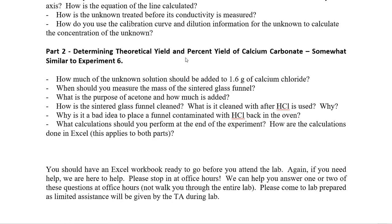For part two, you're going to determine the theoretical yield and percent yield of calcium carbonate, similar to experiment six. Questions to consider: How much unknown solution should be added to 1.6 grams of calcium chloride? It's 20 milliliters. When should you measure the mass of the sintered glass funnel? What is the purpose of adding acetone and how much is added? How is the sintered glass funnel cleaned — with HCl and then water. Why is it a bad idea to place a funnel contaminated with HCl back in the oven? Because HCl will go into the gas phase and the next person who opens the oven could potentially breathe it in. So please wash with water after washing with HCl.